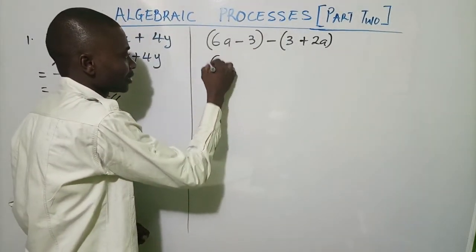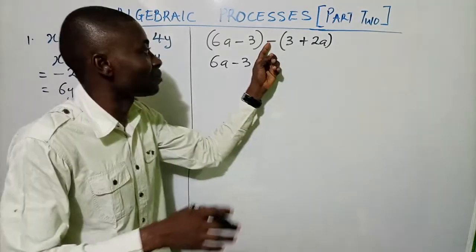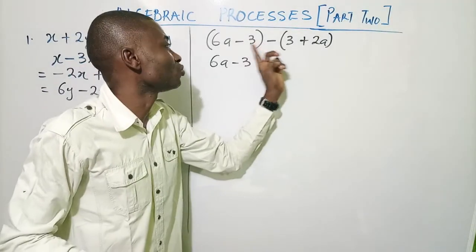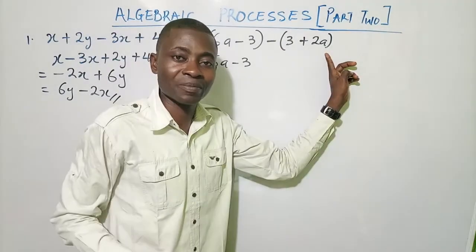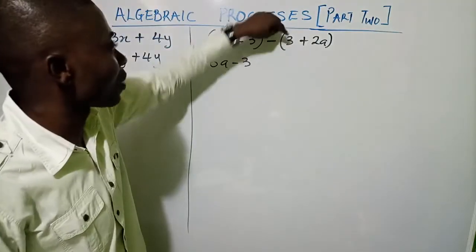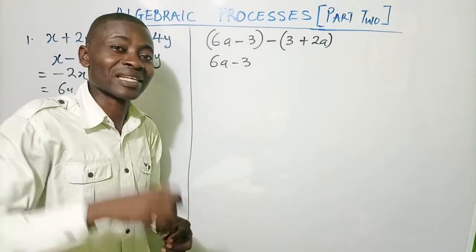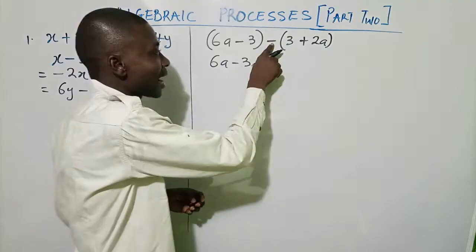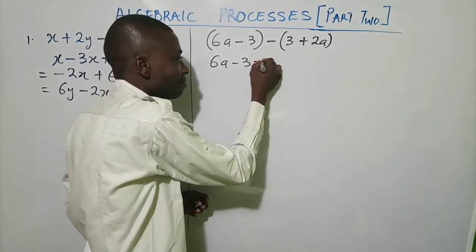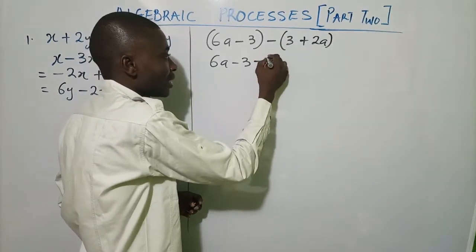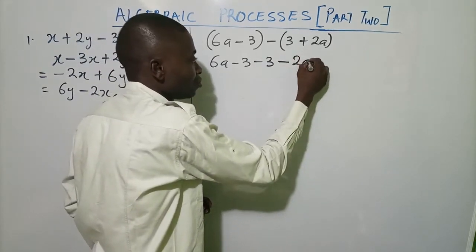So we write: 6a minus 3. Now this is where the work comes — look at this minus sign. We are going to use this minus to open the bracket, meaning multiply everything inside the bracket. Remember, when you see a whole number standing there, there is a positive sign in front of it. So minus times plus gives minus, and minus times plus again gives minus two a.